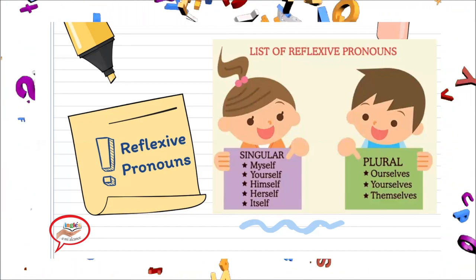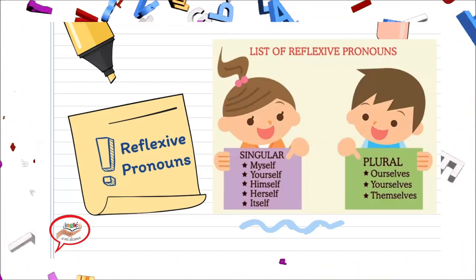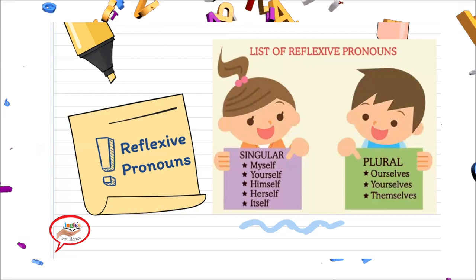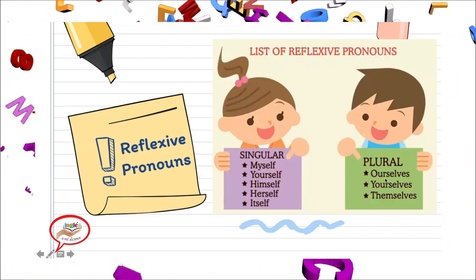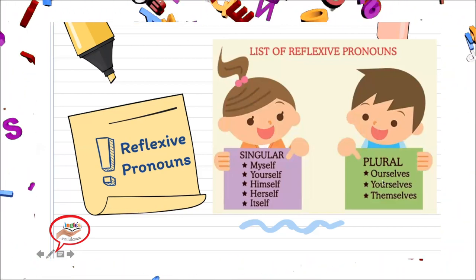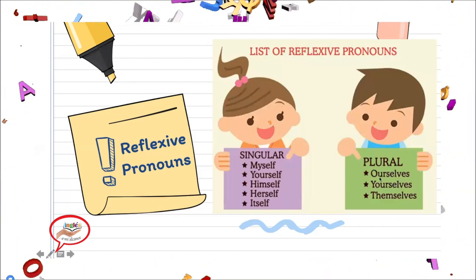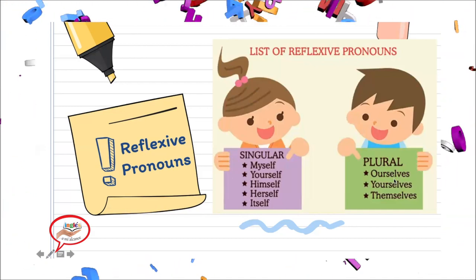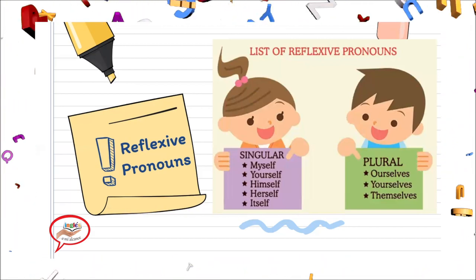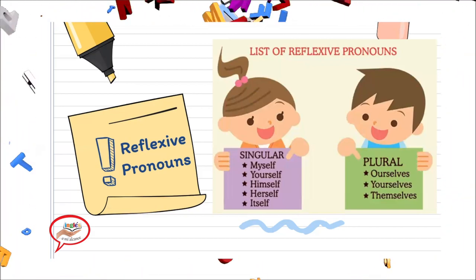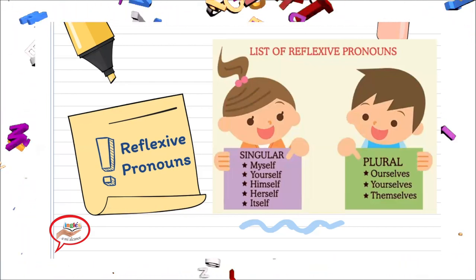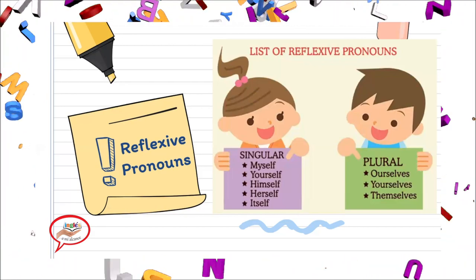Ahora que ya vimos los reflexive pronouns en singular, vamos a ver los reflexive pronouns en plural. Esos son más fáciles porque solamente tenemos tres. Tenemos ourselves — lo utilizamos cuando nosotros queremos usar el pronombre we. Cada vez que miremos ourselves, nos estamos incluyendo en la oración. Ourselves va a referirse siempre a we.